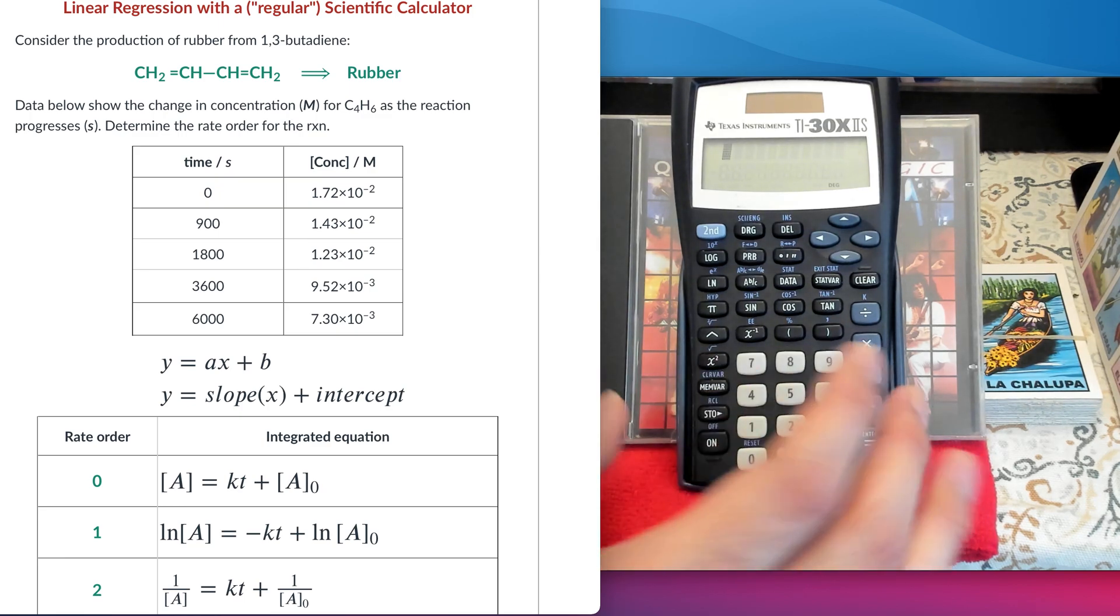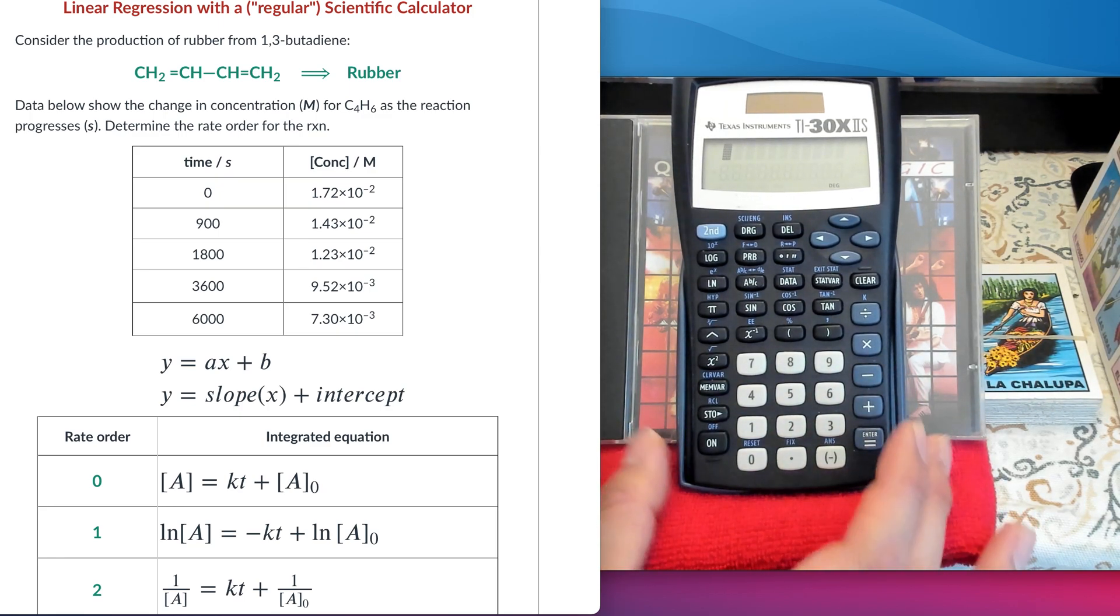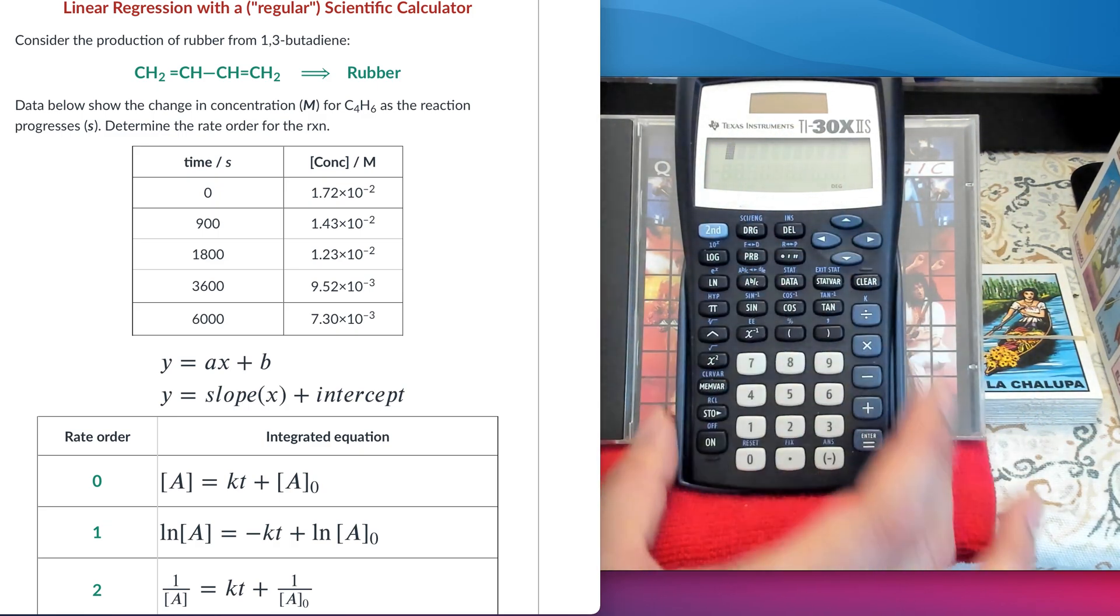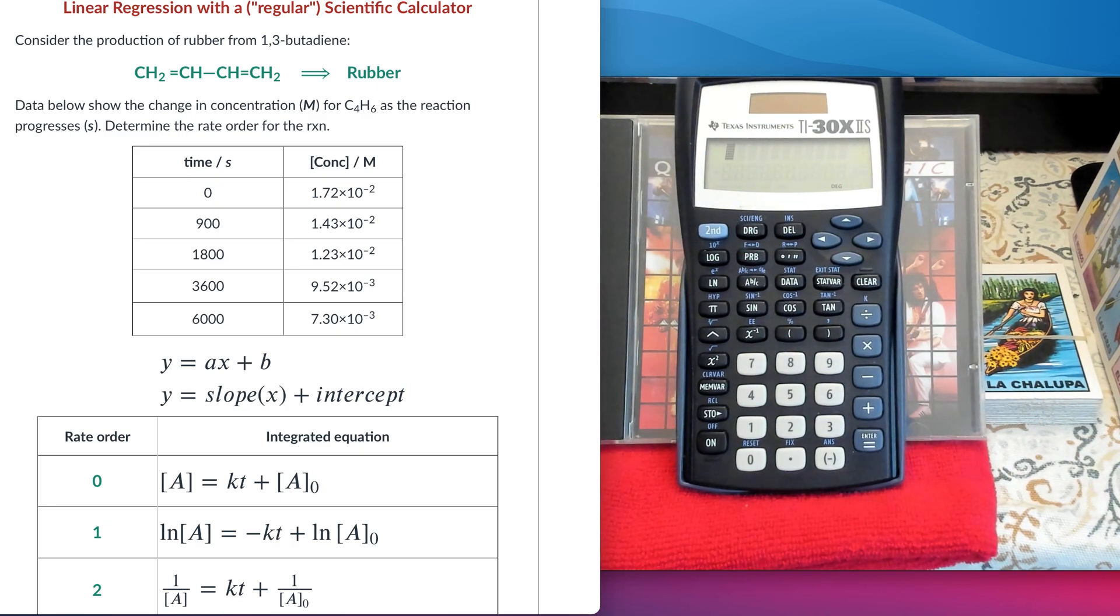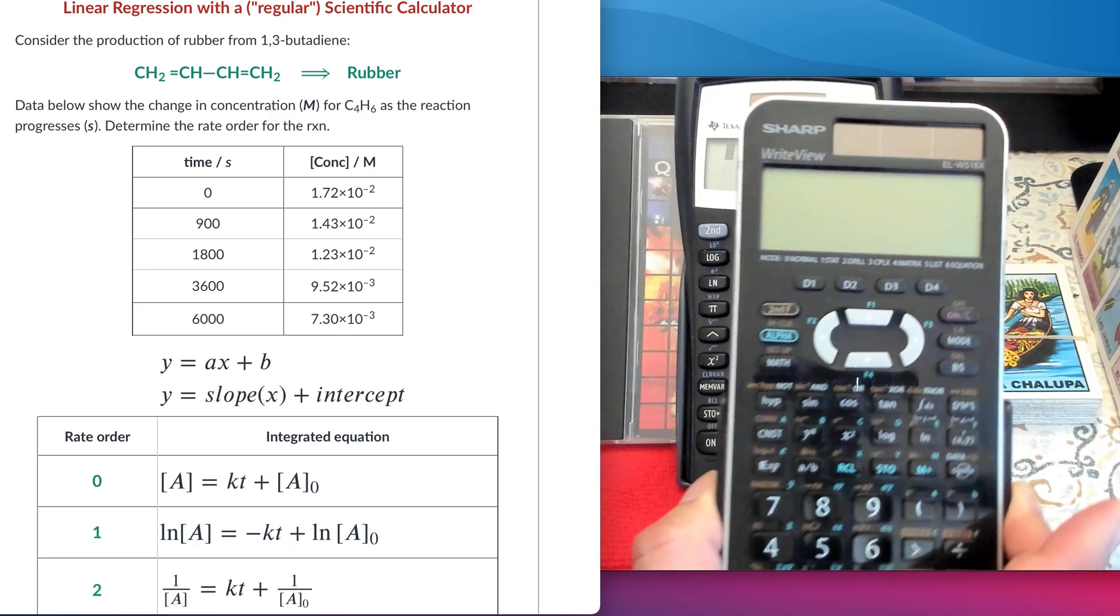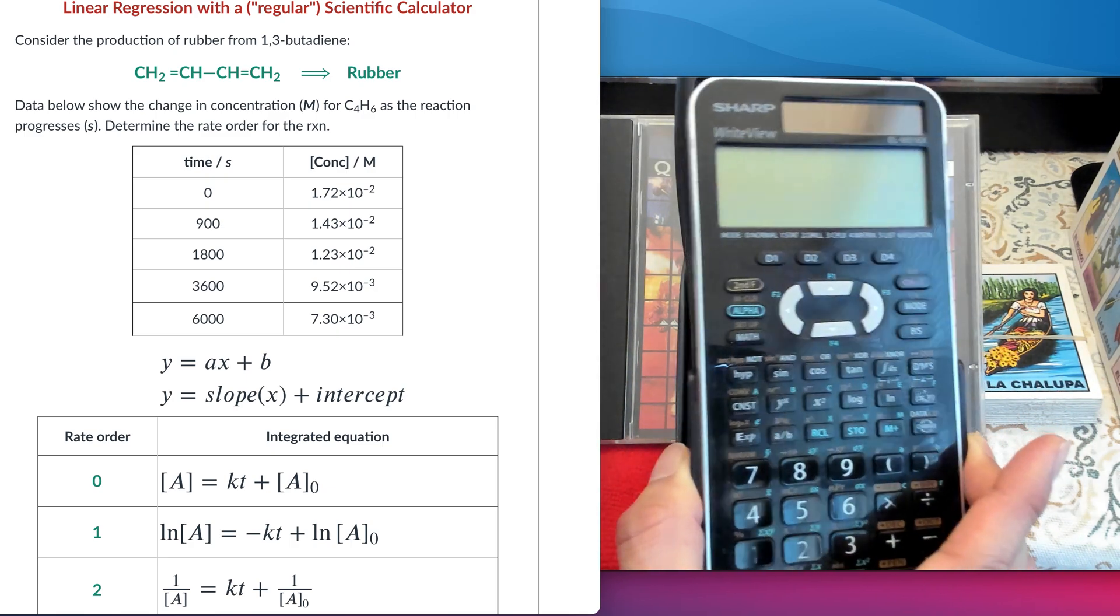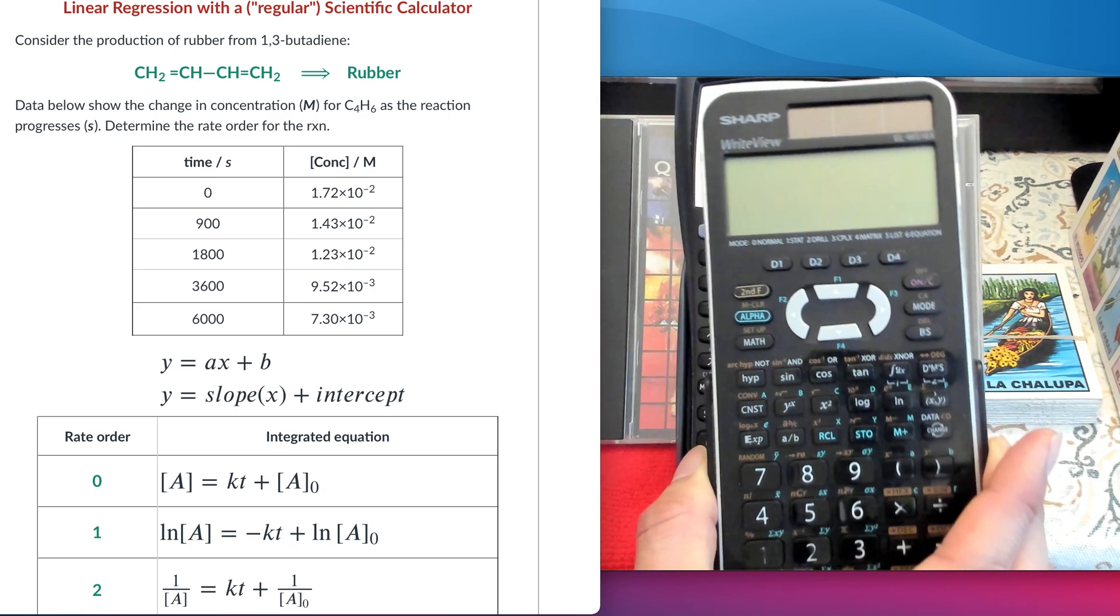I'm going to show you how to do linear regression with a regular scientific calculator. For this particular video, I'm going to be using the Texas Instrument model that you see here. In my previous video, I showed you how to do that linear regression with this other model. So if your calculator looks anything like this, please check my other video.